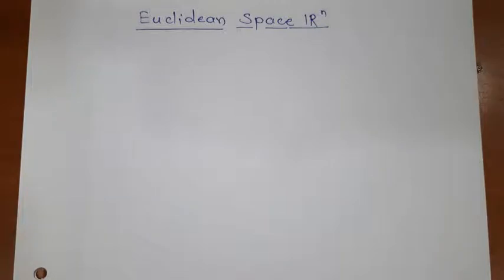So R^n is a generalization of R^2 and R^3. All concepts which we use in R^2 and R^3, just like distance and all, those concepts we generalize to R^n. So let us discuss all these things in details. We will start with R^2 first.